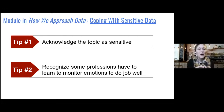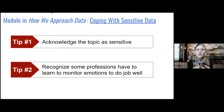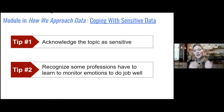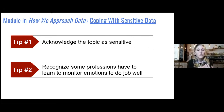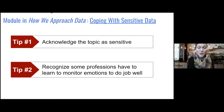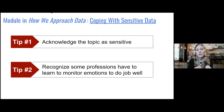Our second tip is to recognize that some professions have to learn to monitor emotions to do the job well — medical and health professionals, social workers, pastors, and other clergy. Biostatistics and statistics are no different. Many in our field feel called to help people, animals, and the environment by using our analytical gifts to further research that will improve the world. This doesn't mean you can't have emotions — in fact, approaching work from a personal perspective can be very valuable. It just means it's important to have strategies to maintain a healthy relationship with emotions when doing research on sensitive topics.